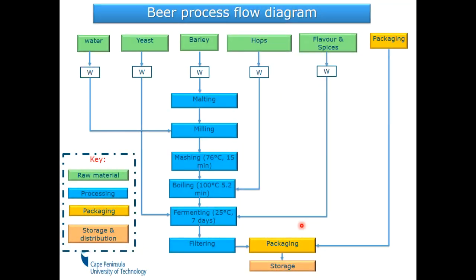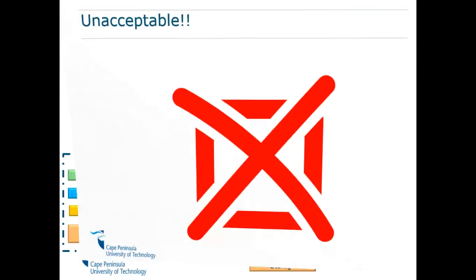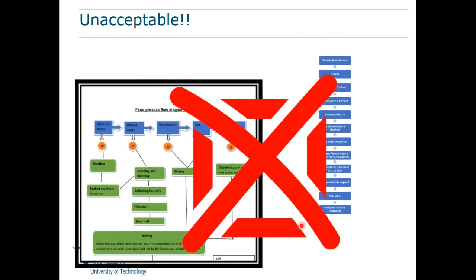When I give assignments to students, they sometimes give me stuff that is unacceptable. A process flow diagram that has a zigzag of steps is unacceptable. Some people have two arrows going in conflicting directions — unacceptable. Others give me something straight with no packaging and no arrows to show where the process is going — also unacceptable. The same goes for the horizontal type I showed in the first slide. A flow diagram should be what I have shown you.